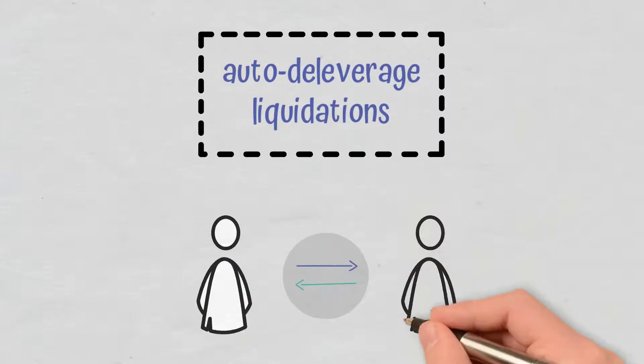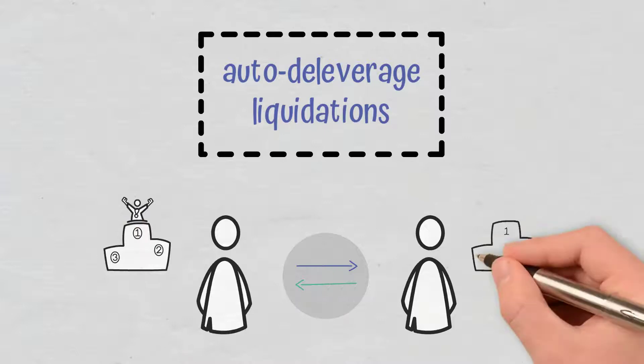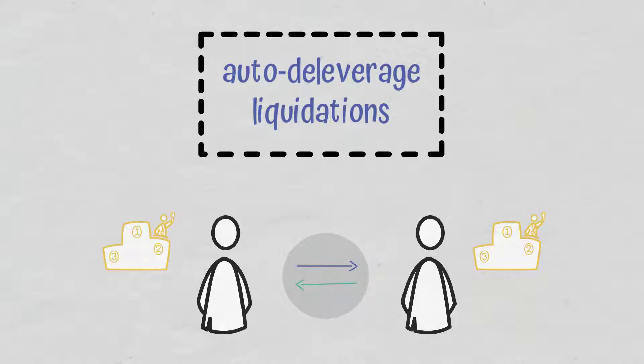In an ADL, the exchange selects opposing traders ranked by profitability and leverage. Positions of opposing traders are then automatically liquidated in order to cover for the losing trader's position.